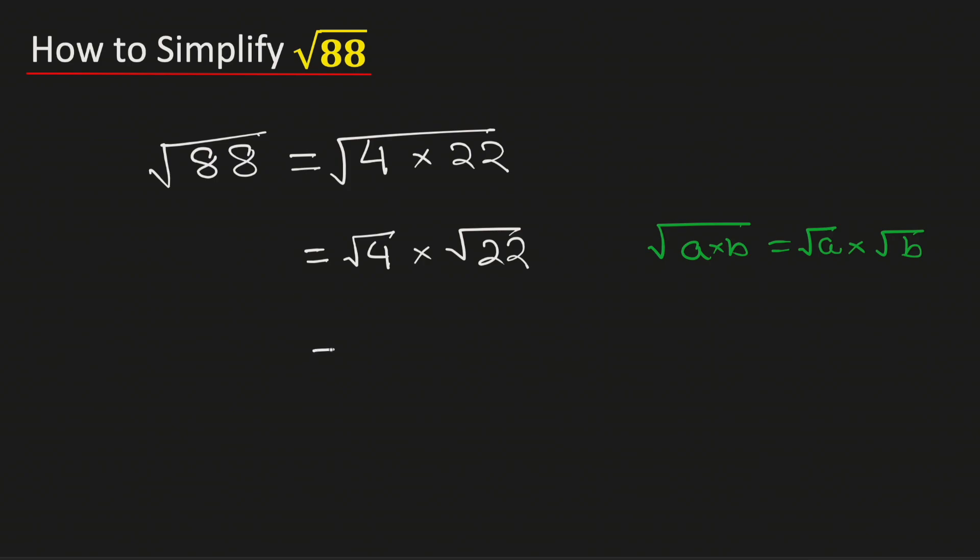Now we know that root 4 equals 2, and square root of 22 remains as is because 22 is a non-perfect number. Multiplying, we get 2 root 22. Therefore, square root of 88 in its simplified radical form equals 2 root 22.